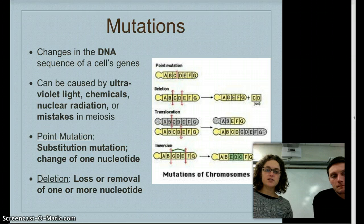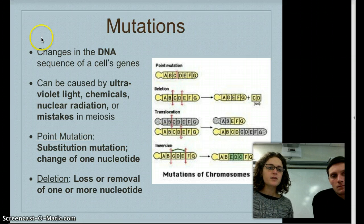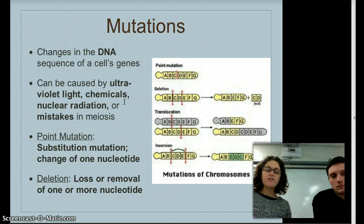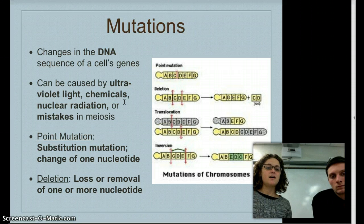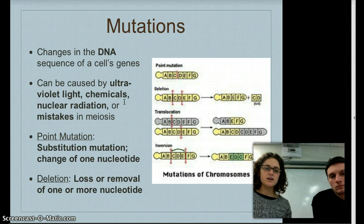Another way we can increase genetic diversity is through simple mutations. You have to put yourself back in the DNA and protein synthesis unit — changes in the DNA could change what you get out of a gene. These can be caused by environmental factors like UV light, toxic chemicals such as cigarette smoking, nuclear radiation, or just mistakes in the way DNA is interpreted or replicated.